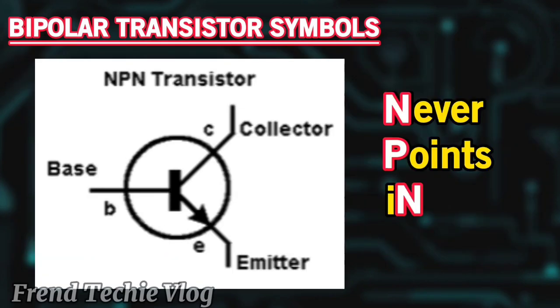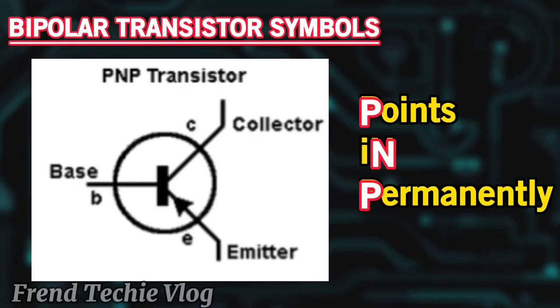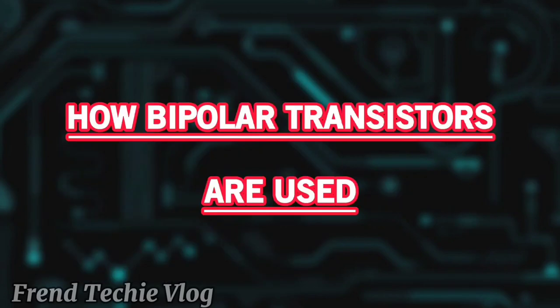These are the bipolar transistor symbols. NPN stands for 'never points in,' while PNP stands for 'points in permanently.' These are the two types of how bipolar transistors are used.